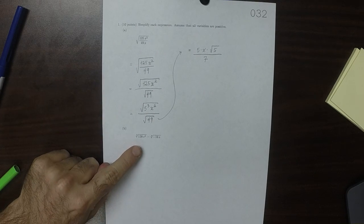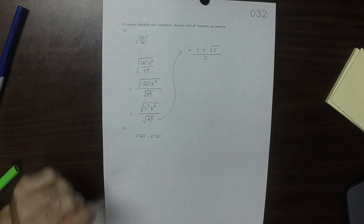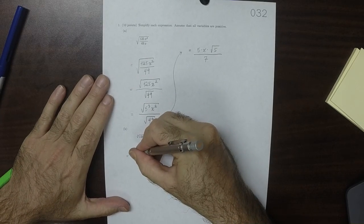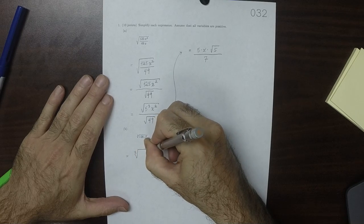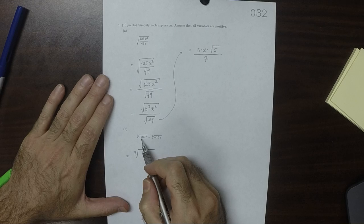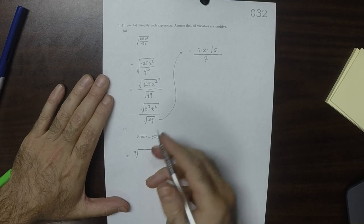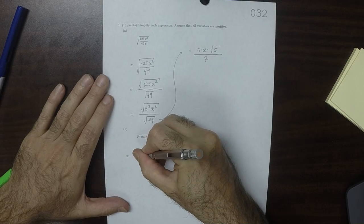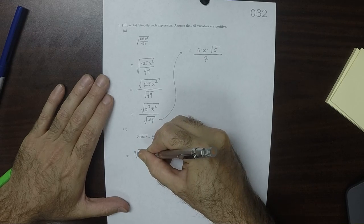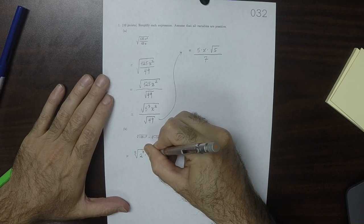As for this one, this again we'll need to factor. So this is cube root of 128 is 2 to exponent 7, so 2 to exponent 7, multiplied by z to exponent 3,